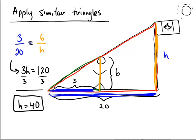So by similar triangles, we can deduce that the height of the flagpole must be 40. Okay, why don't you pause the video and see if you can do this other problem on your own.